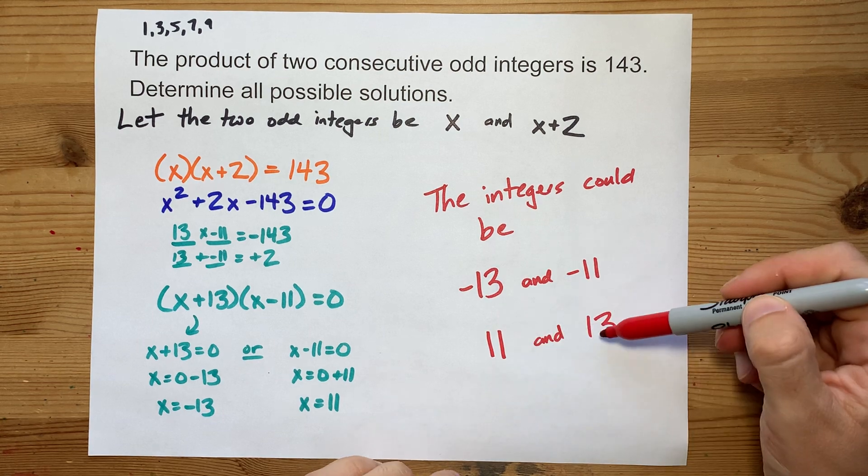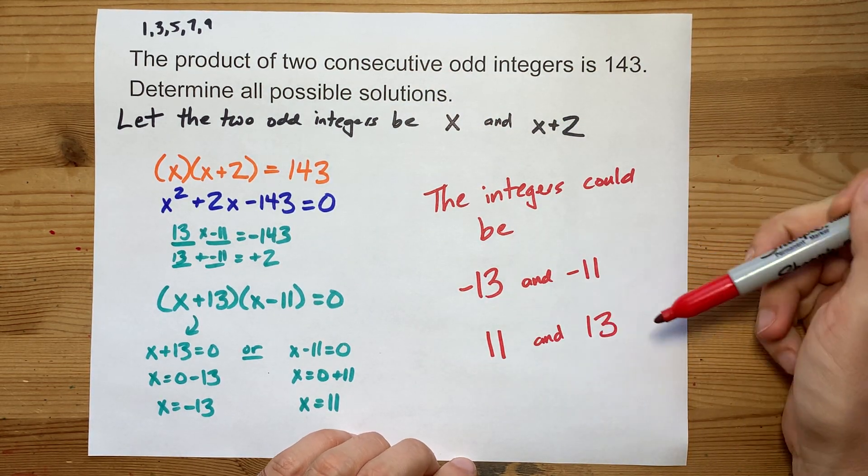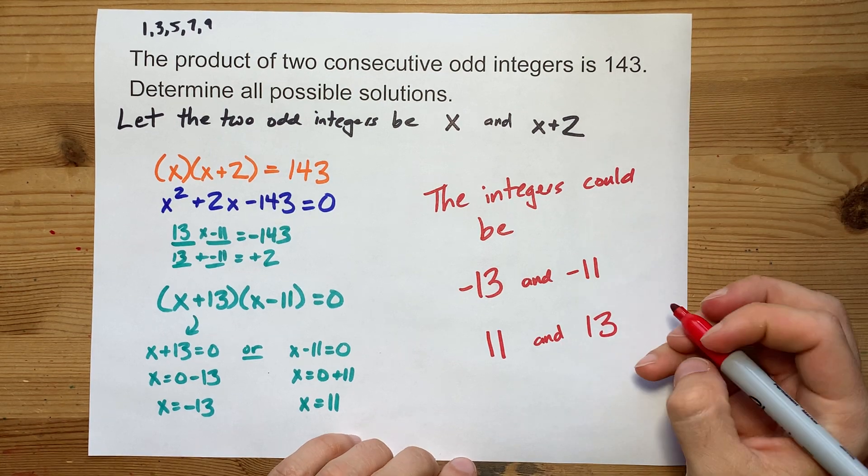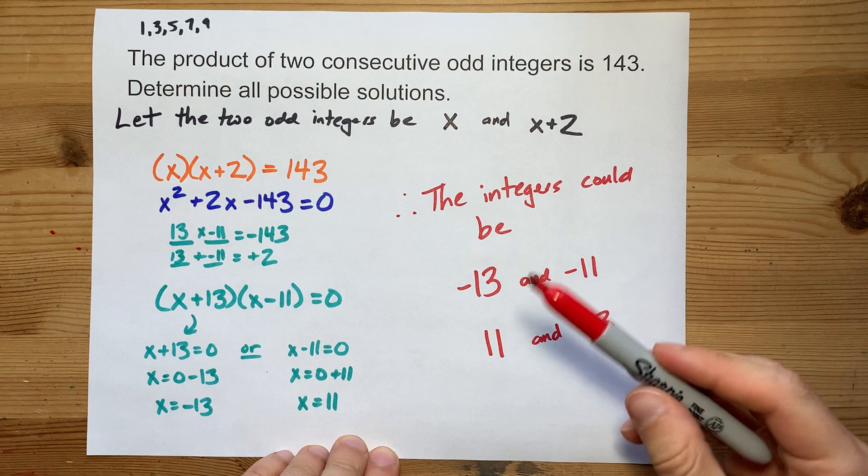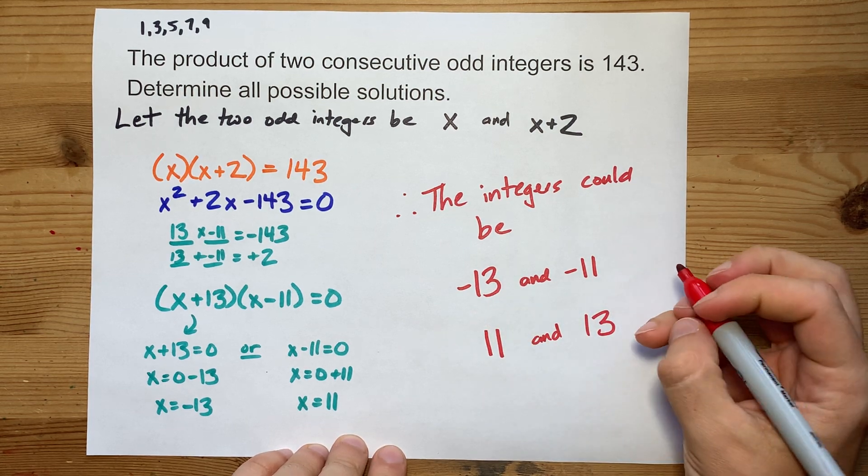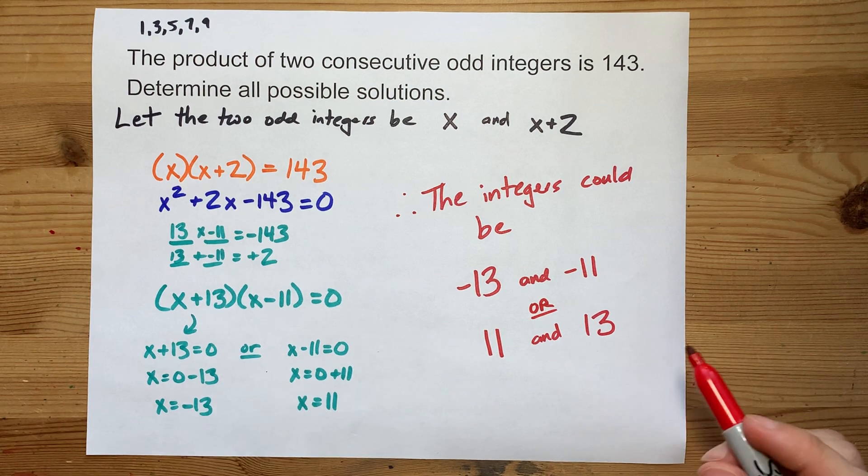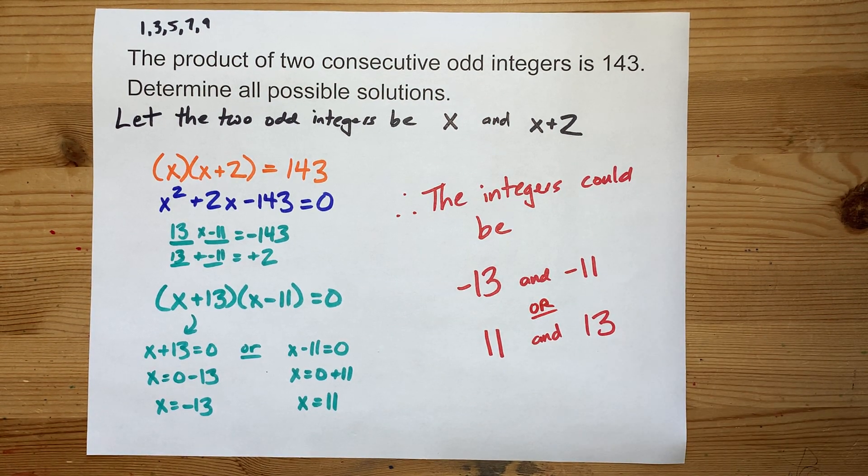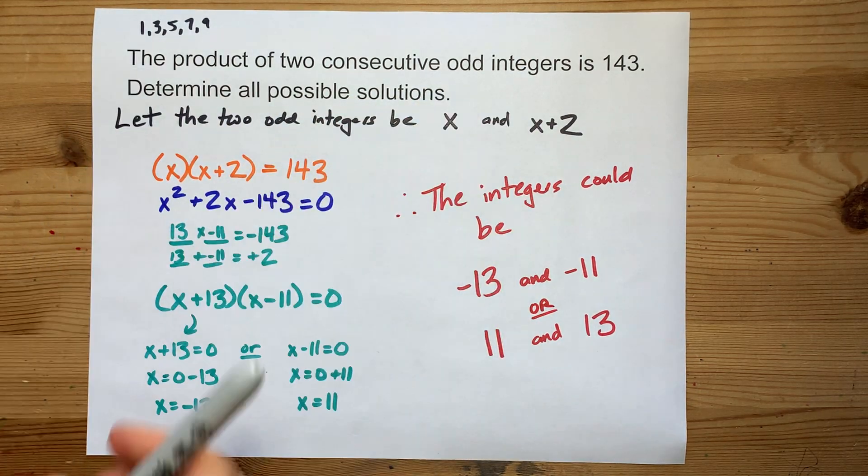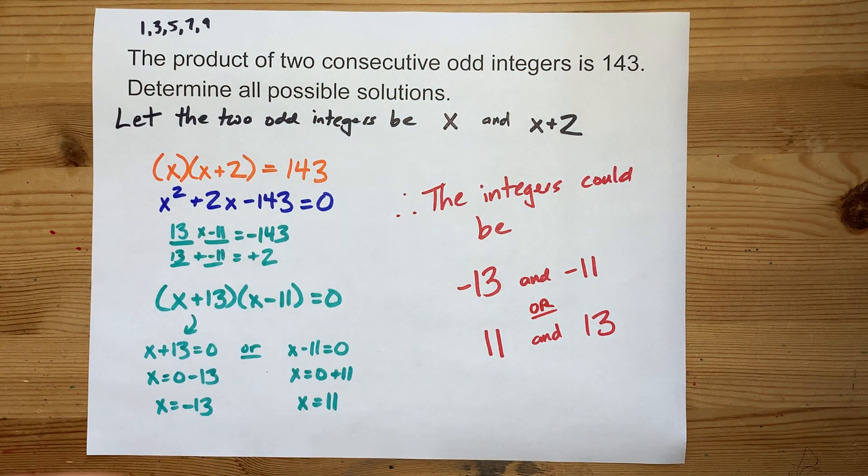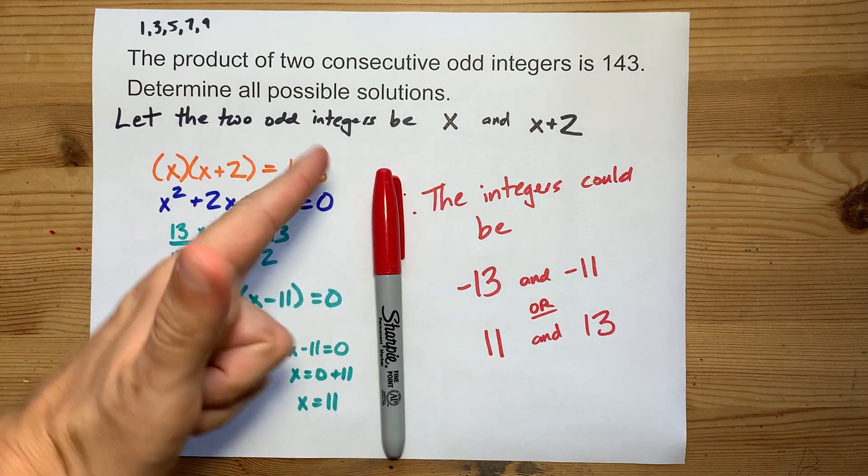Similarly, 11 and 13 are consecutive odd integers, and 11 times 13 is 143. I'm just going to put the therefore. Therefore, the integers could be negative 13 and negative 11, or it could be positive 11 and positive 13. We weren't given enough information to know the difference, and it's not our job to. It said all possible solutions. Nice. I love quadratic equations, and so will you. Best of luck.